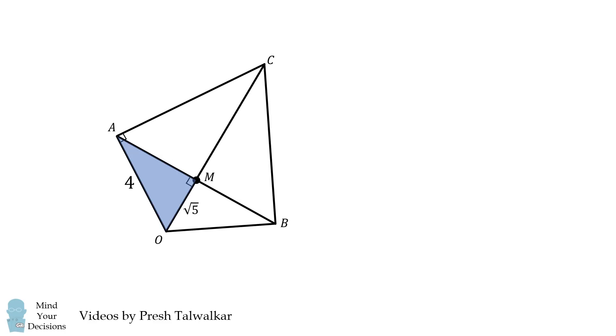We'll first calculate the length of AM. We can do that using the Pythagorean theorem. AM will be equal to the square root of 4 squared minus the square root of 5 squared, and this will simplify to be the square root of 11.